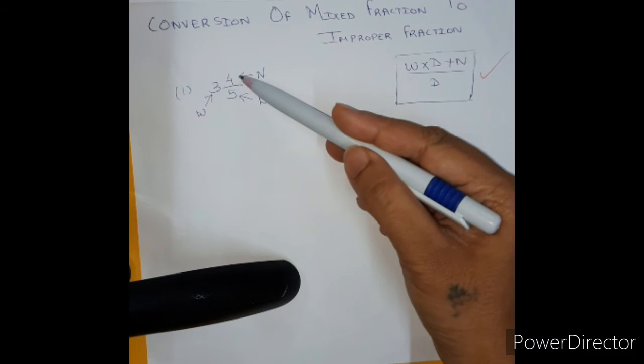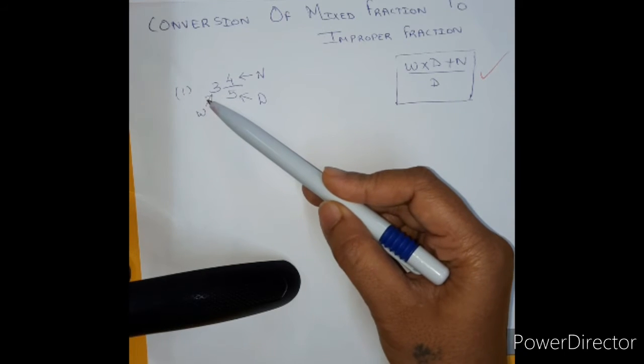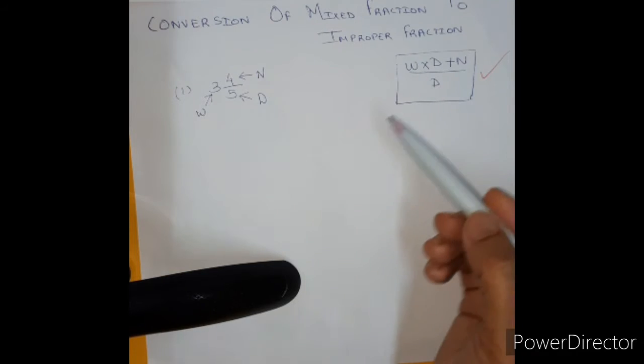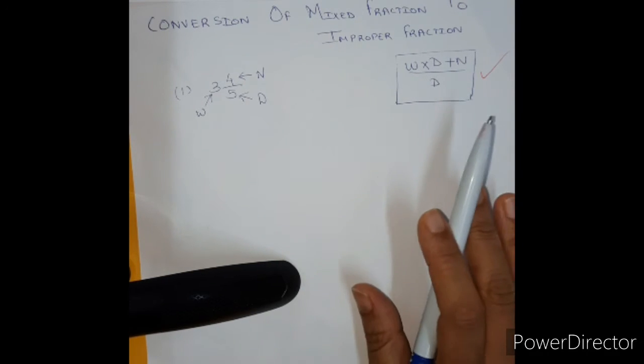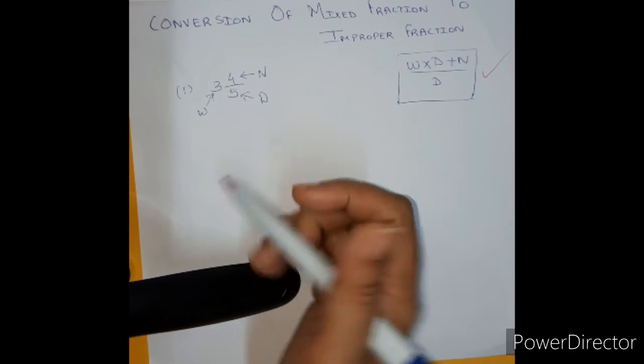The top number is called as the numerator of the fraction and this is the denominator part of the fraction and this one is a whole number part. What we are going to do is, we are going to use this formula throughout when you have to convert mixed fraction to improper fraction.